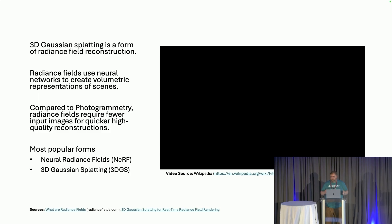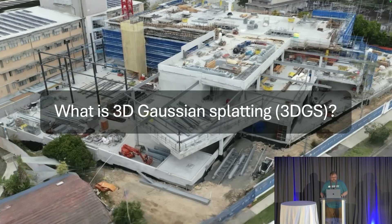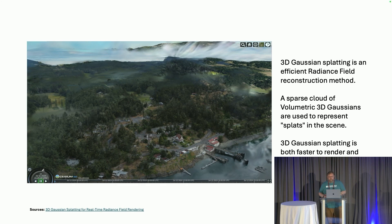Today, neural radiance fields and 3D Gaussian splatting are the two most popular forms of radiance fields. NERF is what really brought everyone's attention to radiance fields — they use continuous volumetric scene functions and offer really high fidelity, but it comes at a cost. Besides being expensive to generate, NERFs can be expensive to render as well. On the other hand, 3D Gaussian splatting is much more attainable and doesn't need an expensive GPU. 3DGS is an efficient radiance field reconstruction method that uses a sparse cloud of volumetric 3D Gaussians to represent splats within a scene, making it faster to both render and train compared to NERF, with largely the same fidelity.